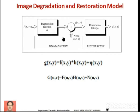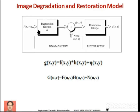In this module, we first start with the image degradation and restoration model. We can model the image degradation and restoration using a block diagram. The input image is f(x,y). This input image is degraded by function h, and the output of this degradation block is f(x,y) convolved with h(x,y).